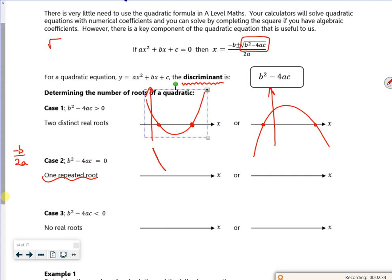So I could have one that looks like that, where it just touches, or like that, where it just touches. Should we stick a y-axis in? Not really the first y-axis, to be honest. There we go, looks lovely. So I've got one repeated root where it just touches the axis.